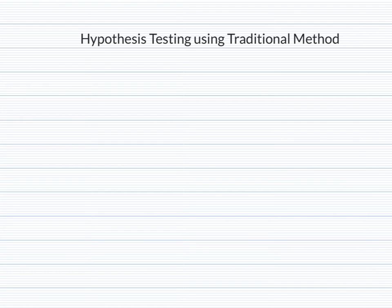This video is going to be about hypothesis testing where we use what's called the traditional method. There are going to be two methods: a traditional method and the p-value method. The next video we will look at the p-value.